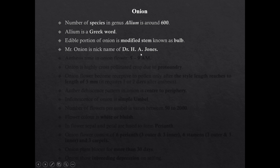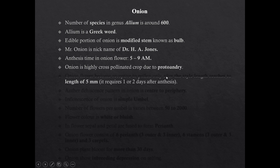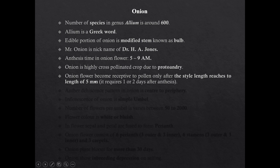Anthesis time in onion is 5 to 9 AM. Onion is a highly cross-pollinated crop due to protandry. Onion flower becomes receptive to pollen only when the style length reaches 5 mm. At the time of anthesis the style length in onion is only 2 mm. That is why onion is protandrous in nature and cross-pollination occurs.